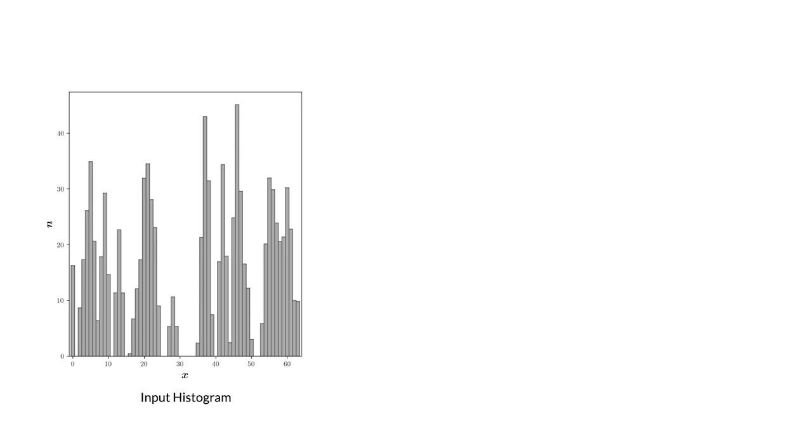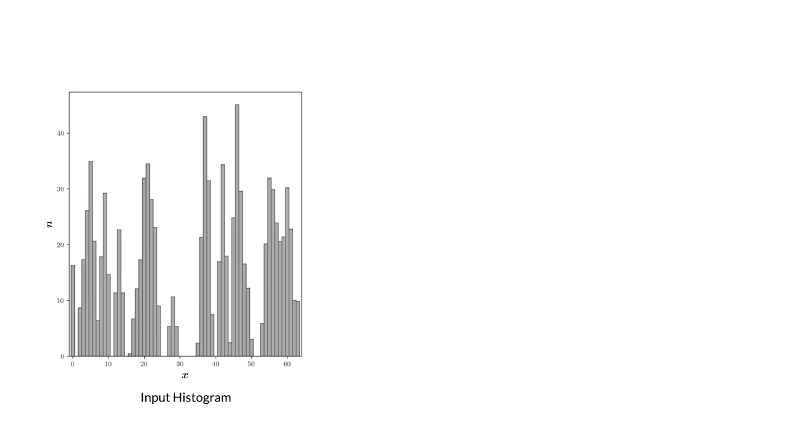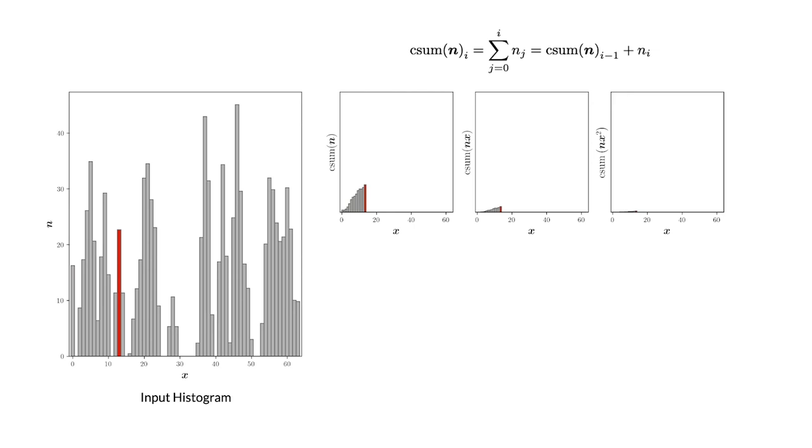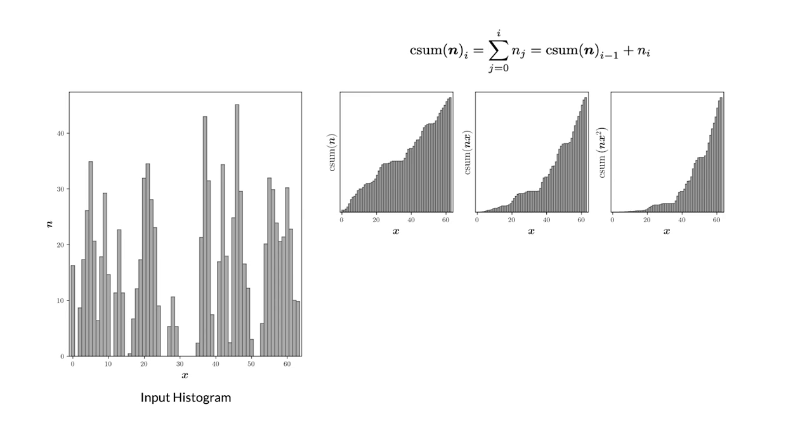But regardless of how useful these techniques might be, the thing that really attracted me to them was just that the math behind these classic algorithms can be really elegant and satisfying. Many of these algorithms rely on using cumulative sums over quantities weighted by the histogram to basically pre-compute different moments of the histogram, which you can do by just sweeping over the histogram in a single pass and recording a bunch of values as you go. Once you have these intervals, you can take advantage of two useful facts. First, the normalized cumulative sum at any given point is an expected value.